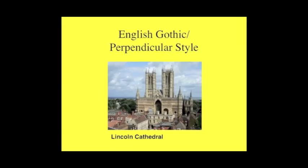Now let's look at England. You can immediately get a sense that something very different is going on in English Gothic with respect to French Gothic. When we looked at French Gothic, the dominant condition of facades and interior space was amplifying the soaring vertical. But here in Lincoln Cathedral and in many English cathedrals, there seems to be some kind of horizontal pull. There also seems to be a variation in the ornamental program toward perpendicularity — toward this kind of nesting together of right angles.